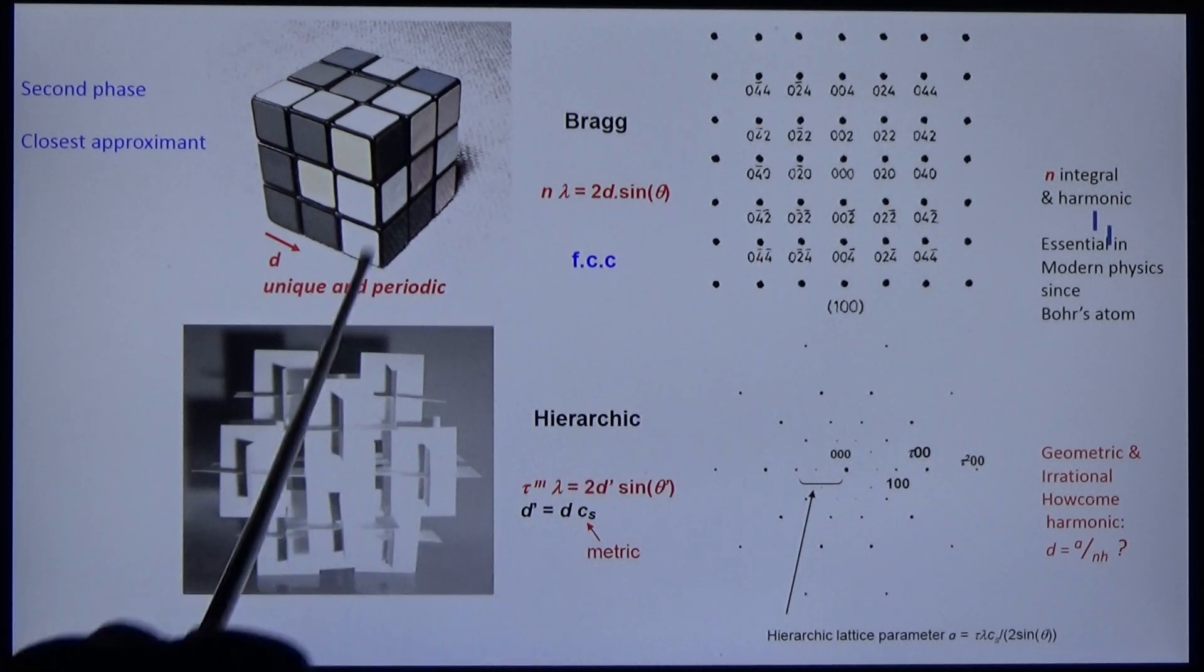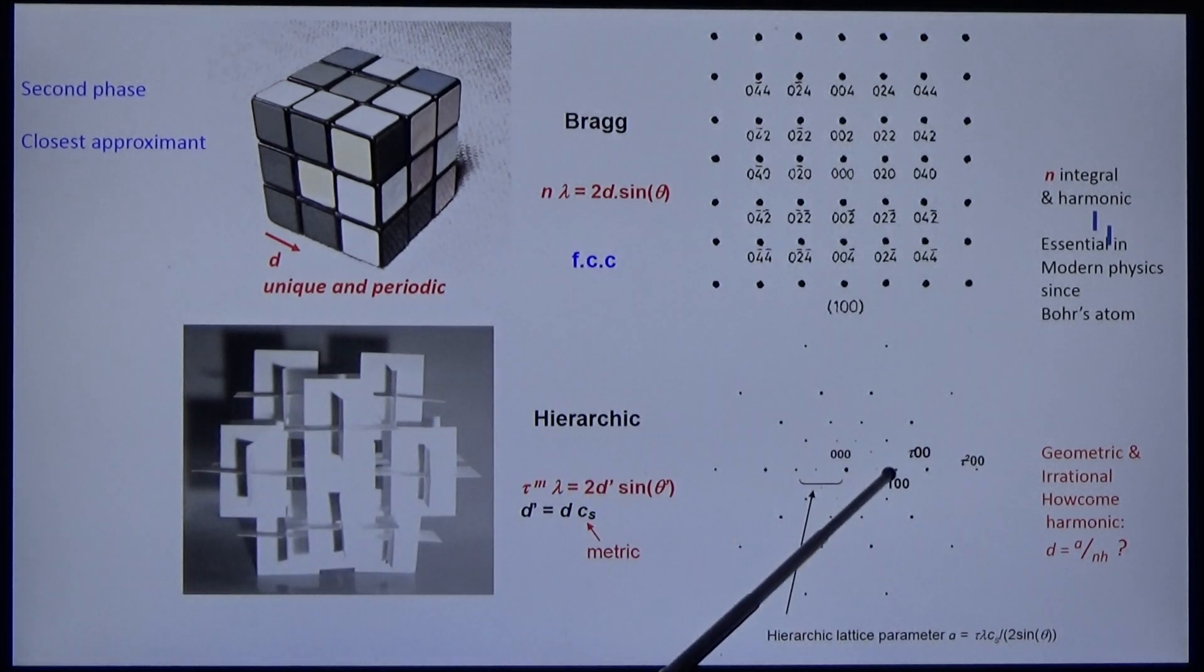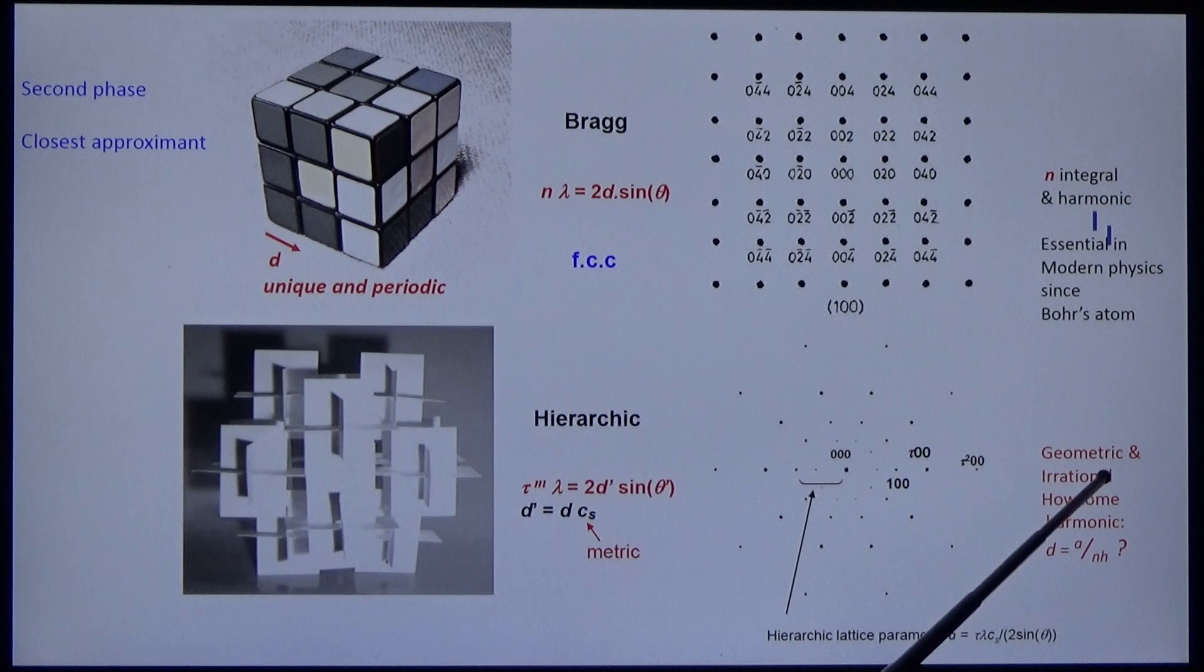But in a quasi-crystal, n equals 0, 1, tau, tau squared, tau to the 4th. It is in geometric series, not integral, and it's irrational. How can it be harmonic?